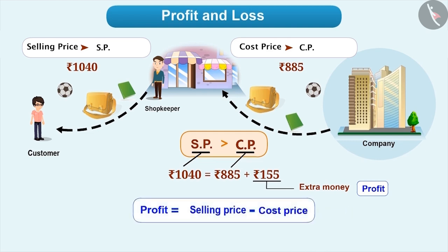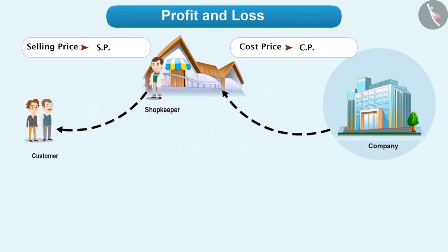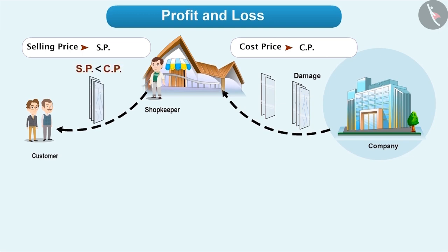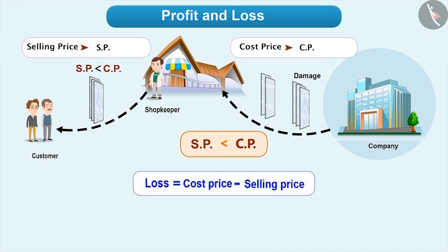Is the selling price always greater than the cost price in every situation? This is not possible in every situation. For example, a shopkeeper purchased some mirrors from a company, but while transportation, glass of some mirrors get damaged. In this situation, it becomes compulsory for him to sell the mirrors at a price lower than the cost price. In such a situation, he has to suffer a loss. We can say that if the selling price is lower than the cost price, then it is called a loss, which is equal to the cost price minus selling price.